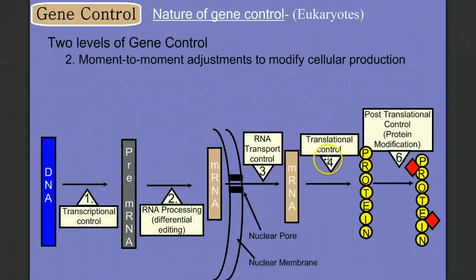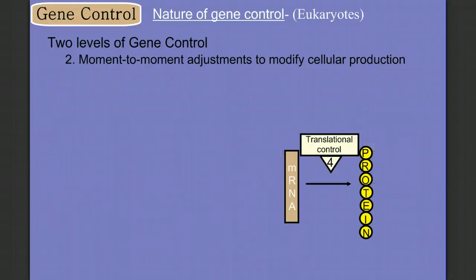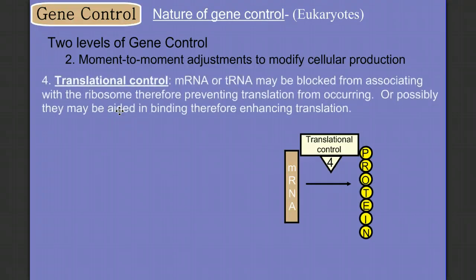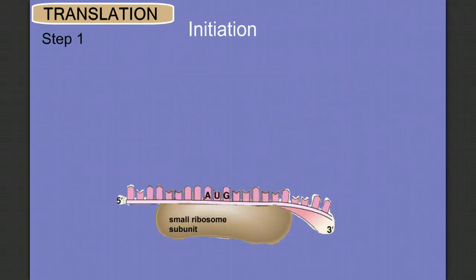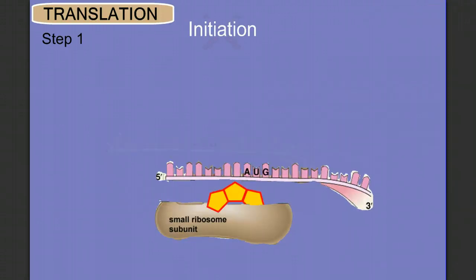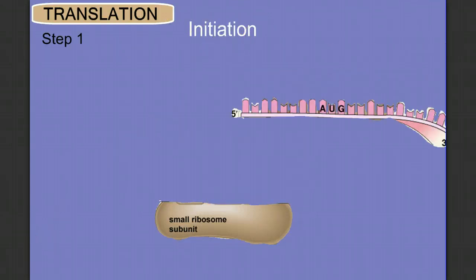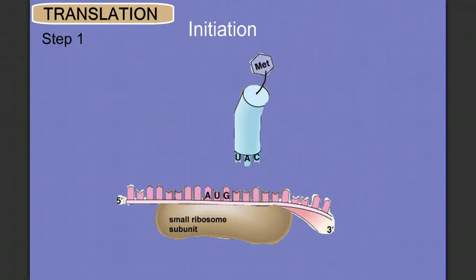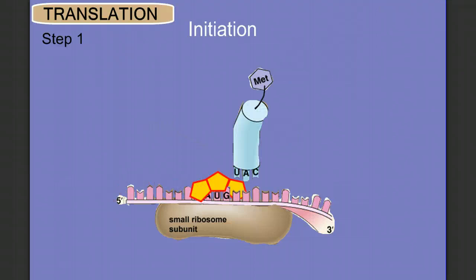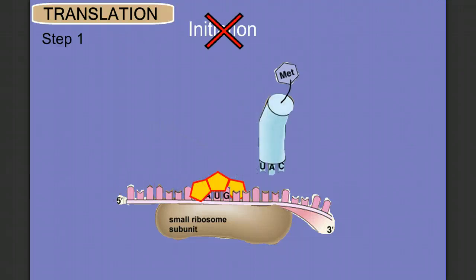Once we get to the ribosome, we're at translational control. Here, messenger RNA or transfer RNA can be blocked from associating with the ribosome, preventing translation from occurring. If we remember that in the initiation of translation the messenger RNA binds to the small subunit of the ribosome, a blocking molecule could get there first and prevent binding, stopping translation. Similarly, if a molecule blocks the transfer RNA from coming in, we again prevent the initiation of translation.